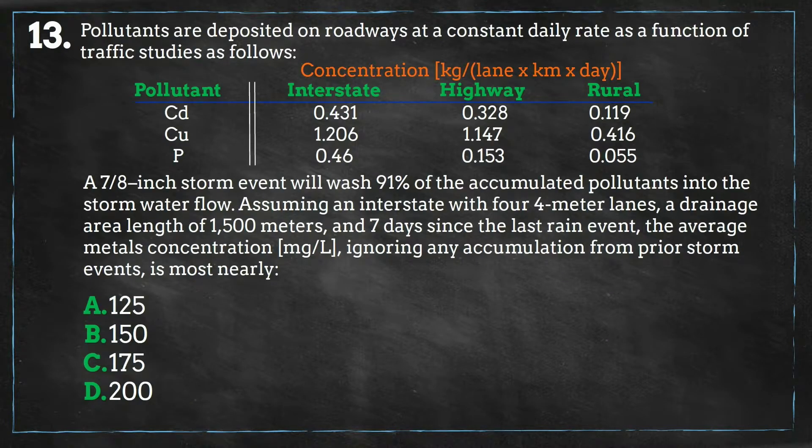So, the first thing we need to do is see which pollutant concentrations we need to pick based off of our scenario. We have a four-lane interstate and we are looking for the average concentration of metals. The first mistake many test takers will make is to simply sum all of the concentrations in the interstate column without realizing that phosphorus is not a metal. So, you do not need to include this pollutant's concentration in your calculations.